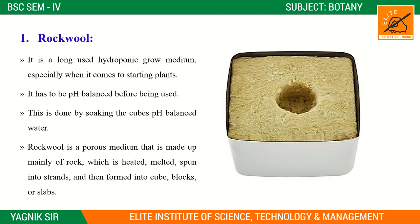This is done by soaking the cubes in pH-balanced water. Rock wool is a porous medium, made up mainly of rock. It is heated and melted into strands, then formed into cubes, blocks, and slabs.